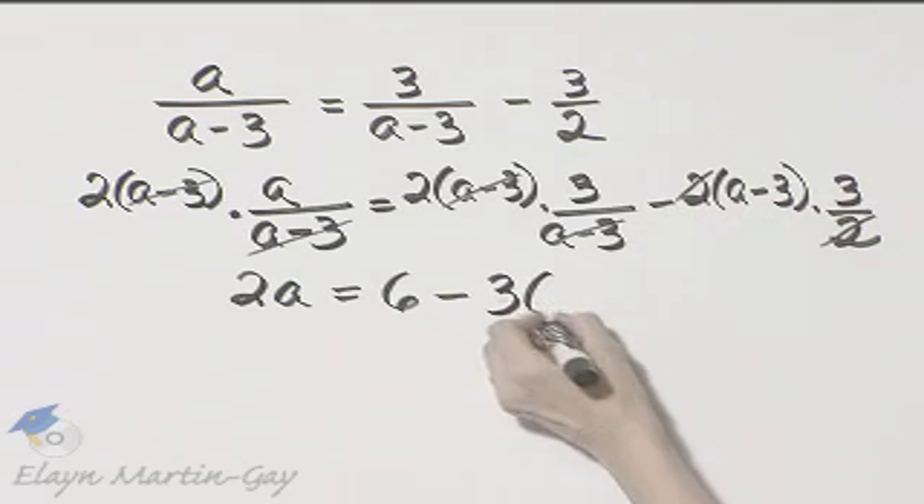I'm going to go ahead and multiply that out, but you be very careful because of this negative sign. As a matter of fact, let me go ahead and write it down. It's negative 3 times A minus 3, because I want to make sure you understand the signs that I get.